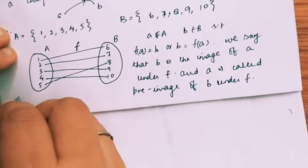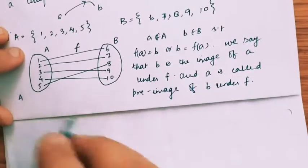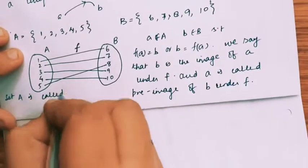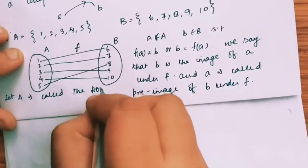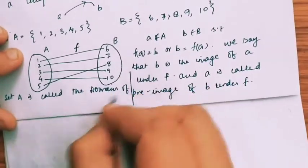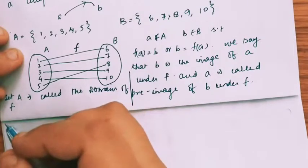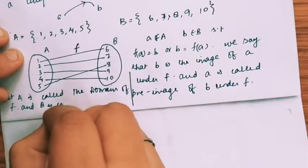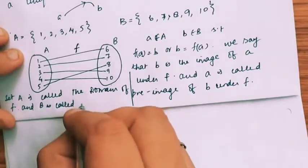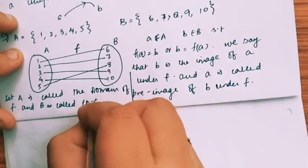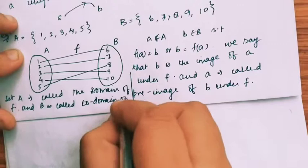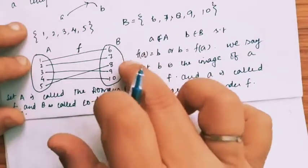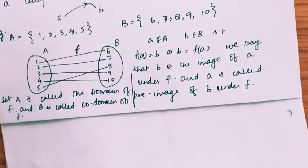The set A is called the domain of the function f. And the set B — which is our second set — is called the co-domain of the function f. So the first set is called domain and the second set is called co-domain.